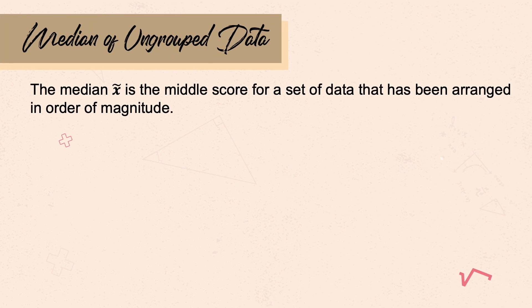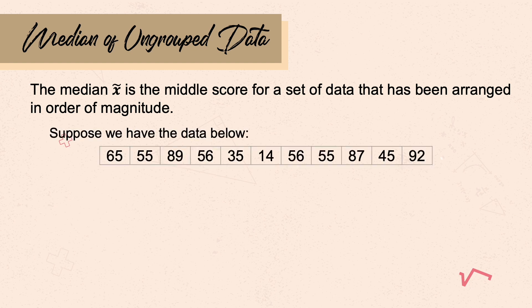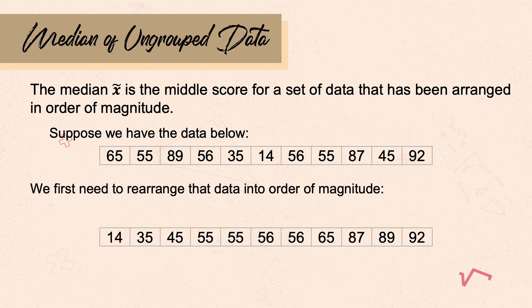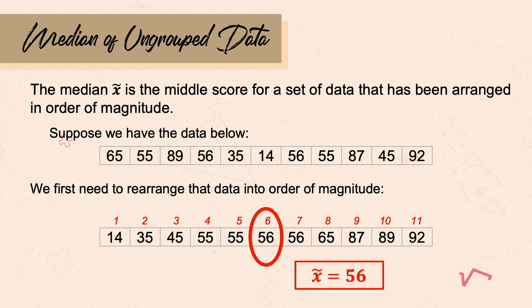The median is the middle score for a set of data that has been arranged in order. Suppose we have data with a sample size of 11. The first thing we do is arrange it in increasing order. The middle position of 11 is 6, so the sixth value is your median. Therefore, the median of the given data is 56.